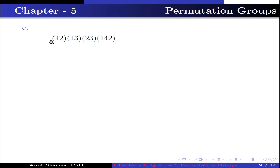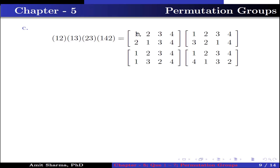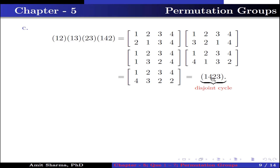Part C: the product of (1 2)(1 3)(2 3)(1 4)(2). Computing this gives a permutation which is written as the disjoint cycle (1 4 3), because 1 has image 4, 4 has image 2, 2 has image 3 and 3 has image 1 — completing the cycle.